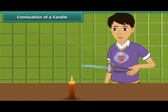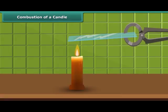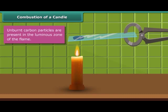Let us watch Rohan performing an activity. He is introducing a glass plate into the luminous zone of the candle flame with the help of a pair of tongs. The glass forms circular blackish spots indicating the presence of unburnt carbon particles present in the luminous zone of the flame.